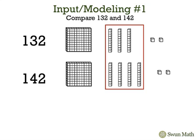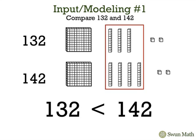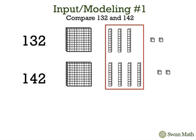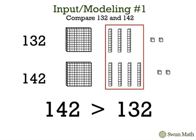These are different. 142 has 4 tens compared to 3 tens in 132. And since 3 is less than 4, this means that 132 is less than 142. We could also write that 142 is greater than 132.